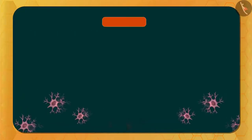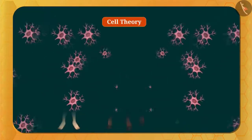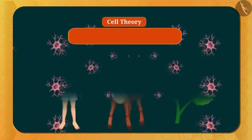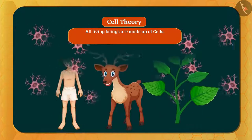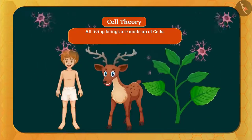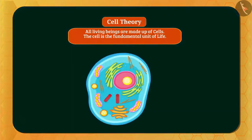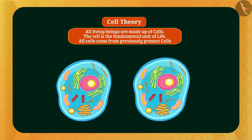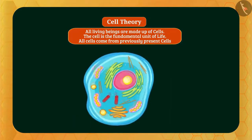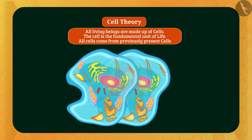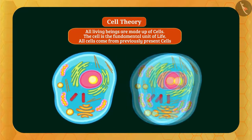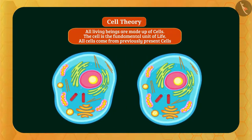After further research, it was found that all living beings are made up of cells. The cell is the fundamental unit of life. All cells come from previously present cells — that is, a pre-existing cell divides and forms two new cells. These are the postulates of cell theory.